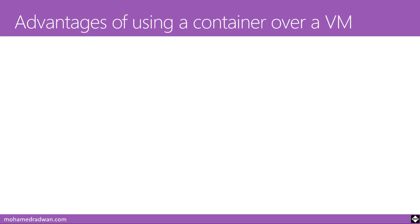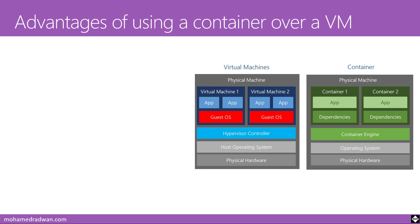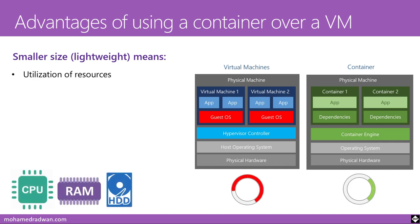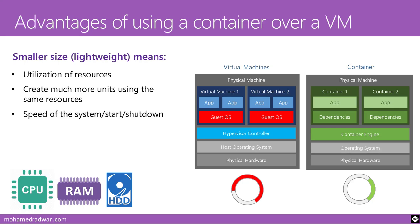Why choose containers over VMs? Because containers don't include the operating system, they are lightweight. This means better resource utilization — less CPU, less RAM, less disk space — which helps create more units on the same resources. It also speeds up starting and shutting down the system, and makes transferring containers over the network or internet much easier because of their small size.